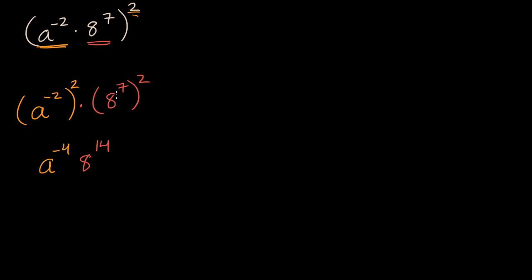In other videos, we go into more depth about why this should hopefully make intuitive sense. Here you have eight to the seventh times eight to the seventh — you would then add the two exponents and you would get eight to the fourteenth. However many times you have eight to the seventh, you would just keep adding the exponents or multiply by seven that many times. The general idea is if you raise something to an exponent and then another exponent, you can multiply those exponents.